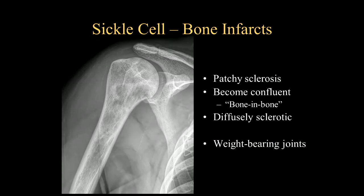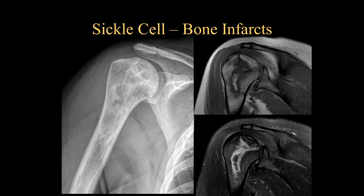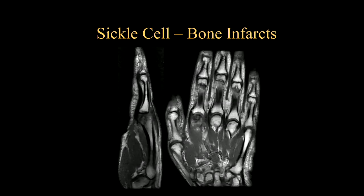Looking at bone infarcts on imaging, with time they become patchy and sclerotic. In the developing phase, they can have a very ill-defined snowstorm appearance. With time, if it starts to become more confluent, it can look like bone within bone or be diffusely sclerotic. It's more common in the weight-bearing joints, specifically the femoral heads of the hips. On MRI, the T1 and T2-weighted images demonstrate a serpentine line between the alive and dead bone due to these bone infarcts — typically very well-demarcated and serpentine. Here's a less common location of bone infarct within the second metacarpal head, with similar features of serpentine, classically subarticular involvement.